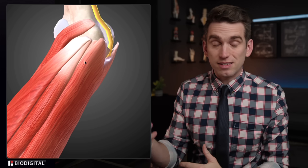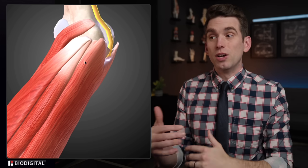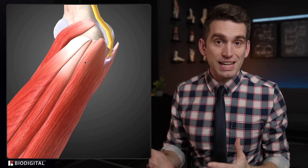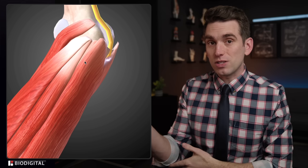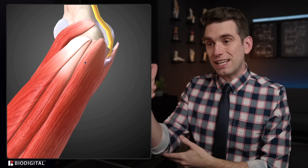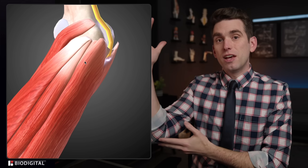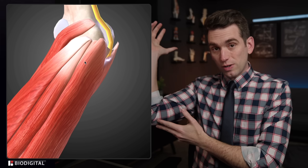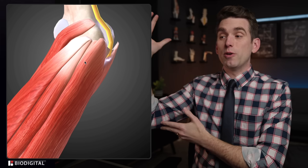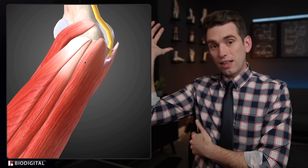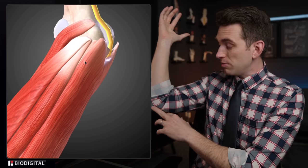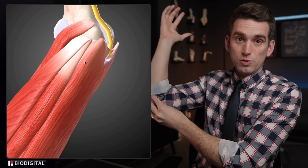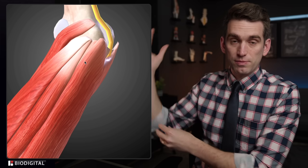We see this in other quarterbacks — this is similar to when Josh Allen had his elbow injury where he suffered a UCL strain. Any excessive valgus stress on the elbow as you're going back into that throwing position is going to be stressing those inner structures.